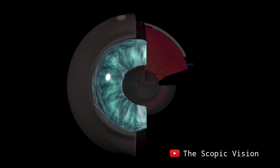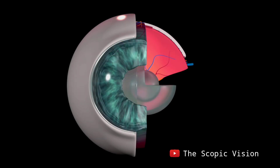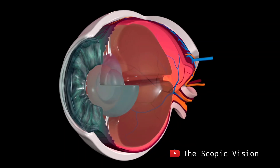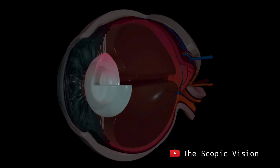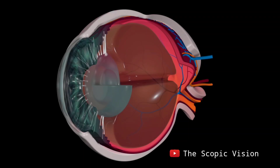Light enters through the cornea, interacting with the pupil. The cornea acts as a protective covering, refracting light. The lens changes shape to focus light on the retina, aided by ciliary muscles.